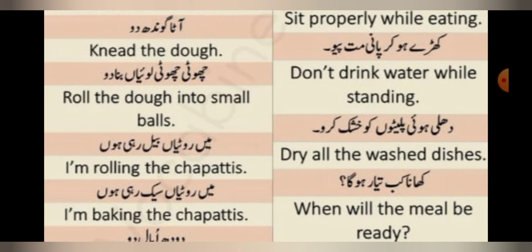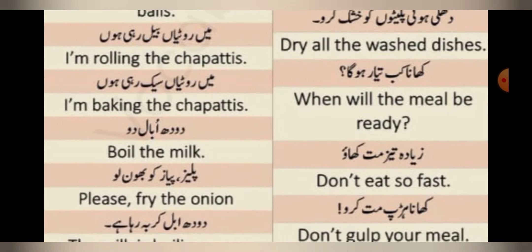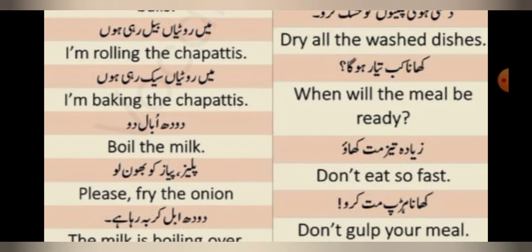We often warn children, so we use these sentences. Choti choti loia bana do — roll the dough into small balls. Loia means balls. The next sentence: dhuli hoi platon ko hushk karlo — dry all the washed dishes. Mein rotiya bel rahi hoon — I am rolling the chapatis.